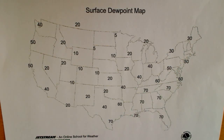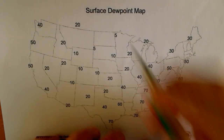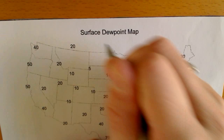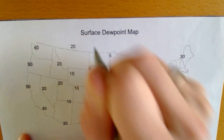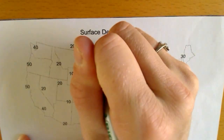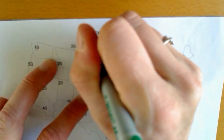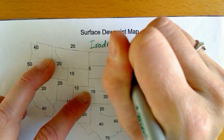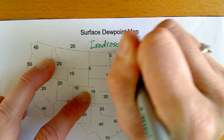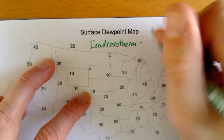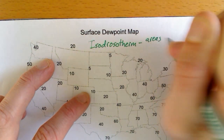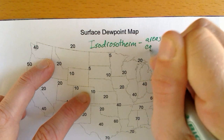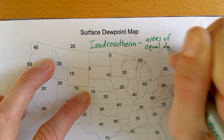When we connected temperatures before, we made isotherms. So when we connect dew points, we're making what is called isodrosotherms. I'm going to do this in green. Isodrosotherm — those are areas of equal dew point.